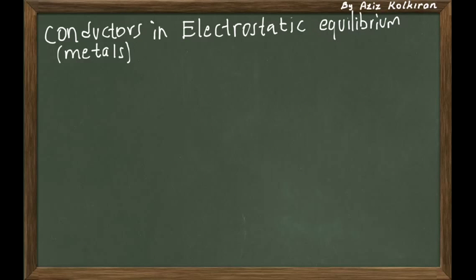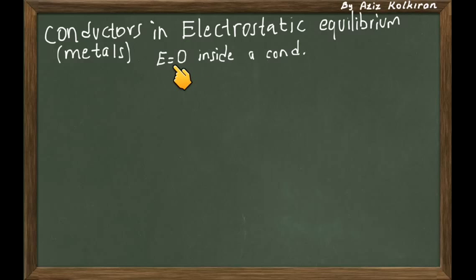Let's think about the conductors in electrostatic equilibrium. We will analyze the motion of free charges inside the conductor which are in electrostatic equilibrium. We will take metals as conductors. The first statement is: if a metal or a conductor is in electrostatic equilibrium, that means at every point inside the conductor — the volume of the conductor — the electric field must be equal to zero.